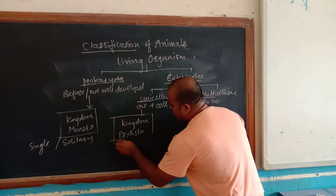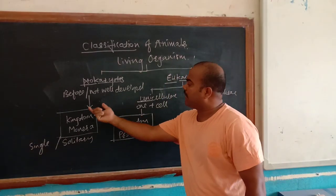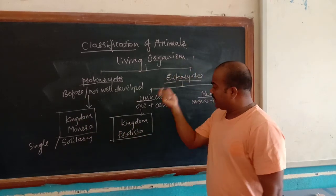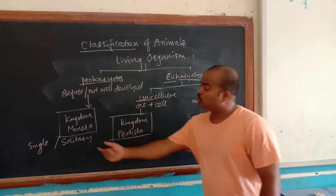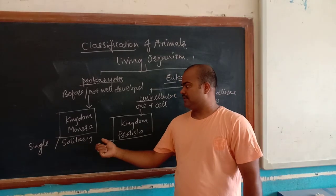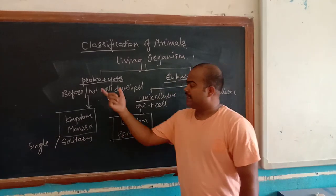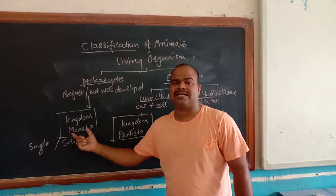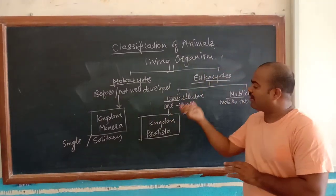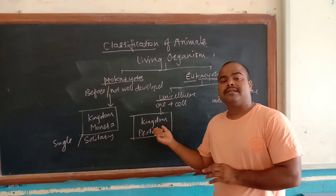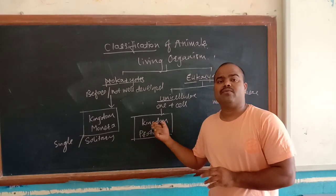Now, to avoid confusion: in prokaryotes, it may be unicellular, but in prokaryotes all cells are not well defined or well developed. But in the eukaryotic multicellular organism, the cells are well developed, well functional, and well categorized.